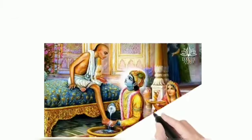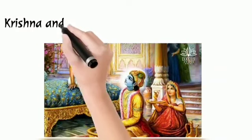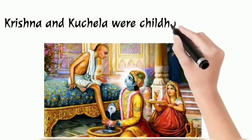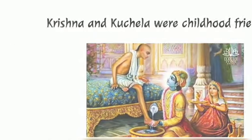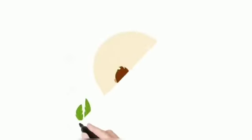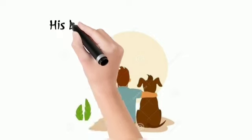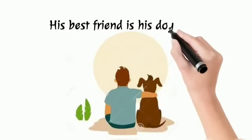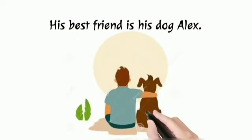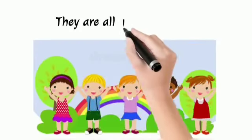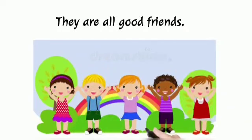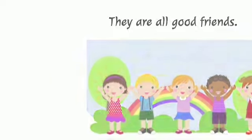Without any further delay, let's get into the examples. The first one: Krishna and Kuchela were childhood friends. Next one: his best friend is his dog Alex. And the final one for today: they are all good friends. Such friends represent an equal society.